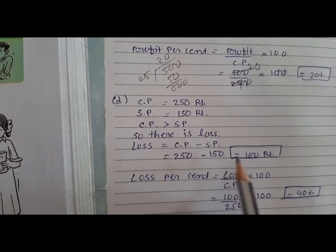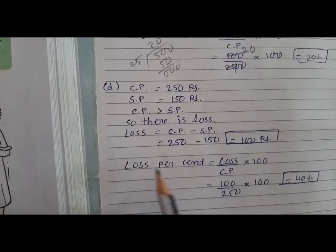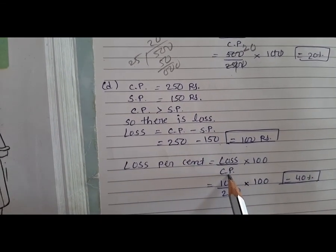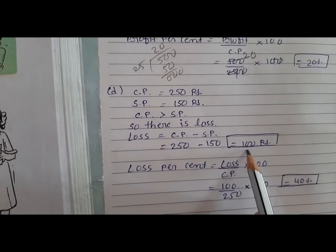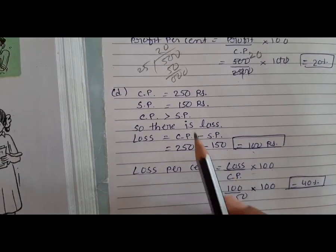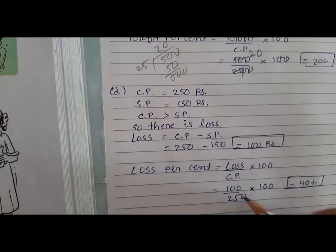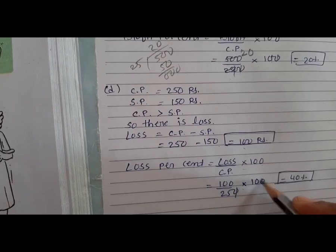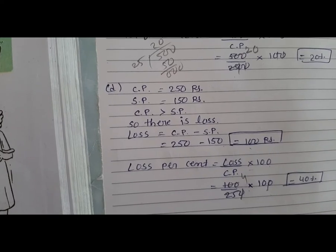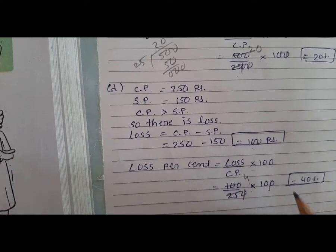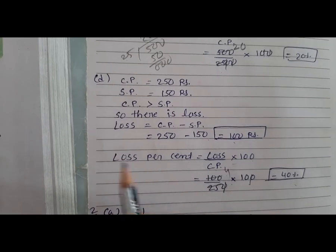Loss is 150, close to 100 rupees. Loss percent equals loss upon cost price multiply 100. Loss is 100 rupees, cost price is 250, so 100 upon 250 multiply 100. After cancellation: 40%. So loss percent is 40%.